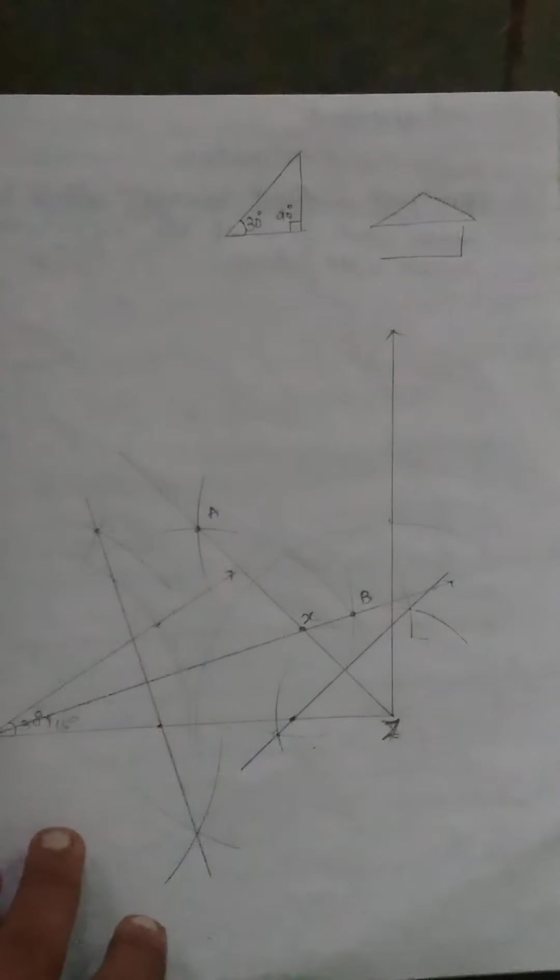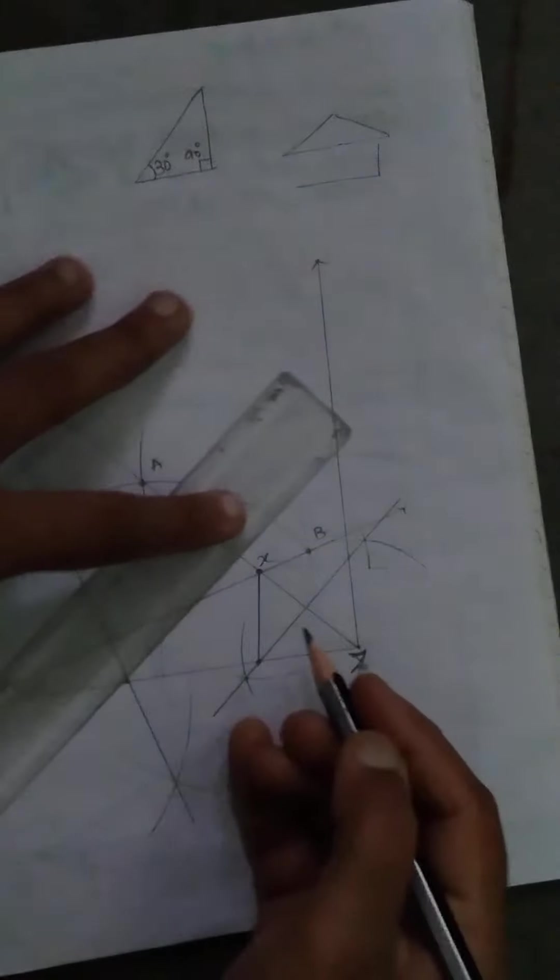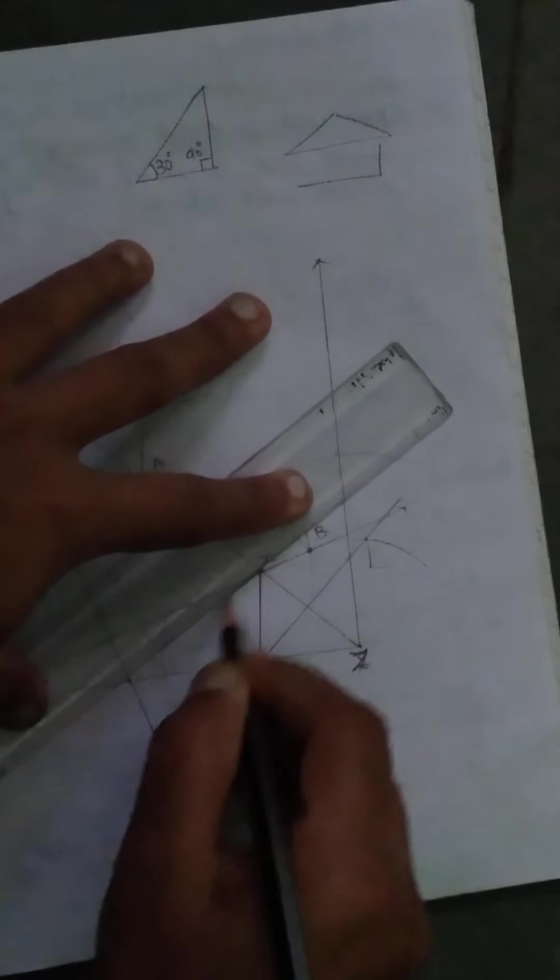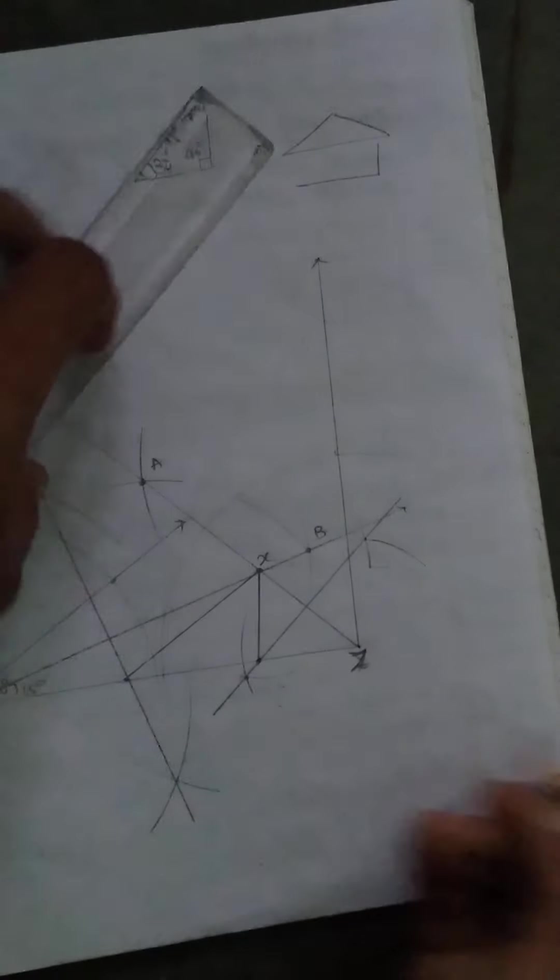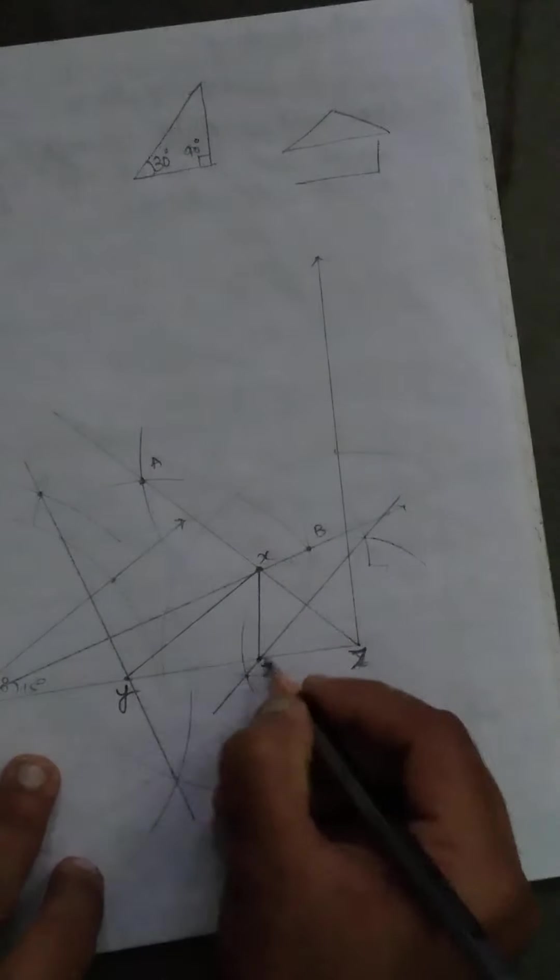Now join these three points now. You got triangle XYZ triangle.